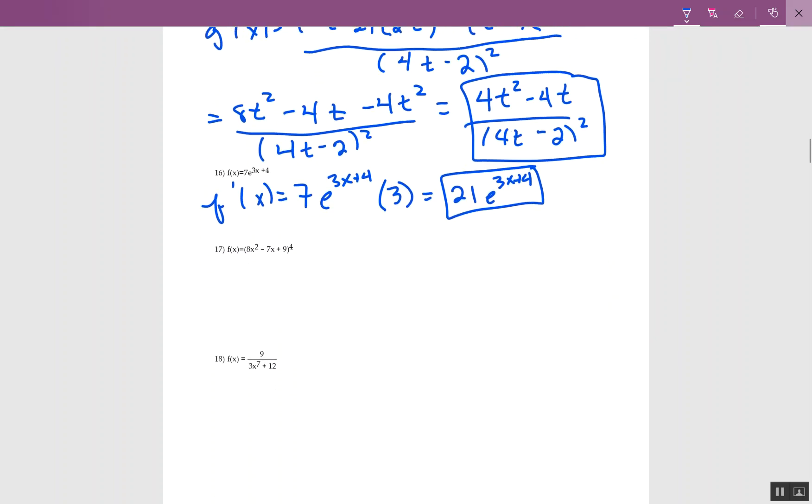17 also chain rule, but this is like generalized power rule. So here I'm going to start by bringing down the power of 4. I write the whole thing, 8x squared minus 7x plus 9, now to the power 3. So there's just the power part.